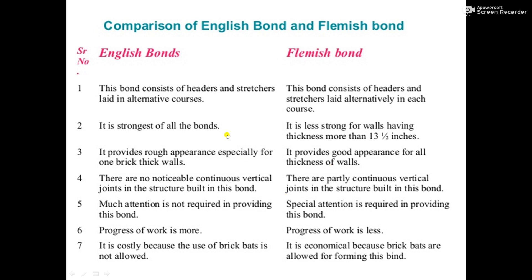The second point: English bond is the strongest of all the bonds. As it is laid with the alternate courses of headers and stretchers, it is the strongest bond used in brick construction. In the Flemish bond, it is less strong for walls having a thickness more than 13.5 inches. English bond provides a rough appearance, especially for a one brick thick wall, and Flemish bond provides a good appearance for all thicknesses of the wall.